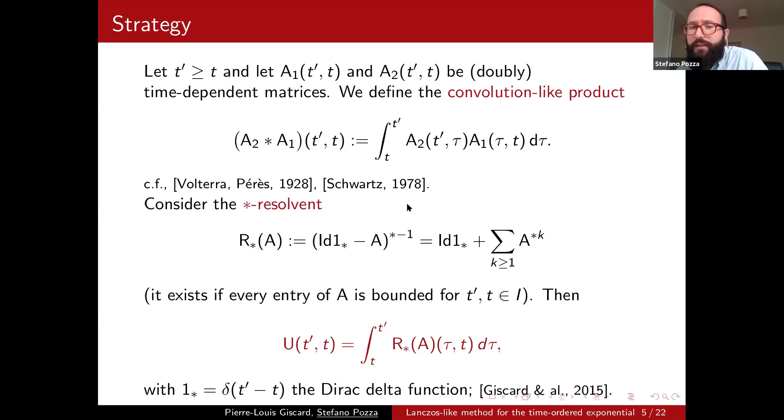So once we have done this, we can define powers of matrices. Pay attention that A star is not the conjugate transpose of the matrix A, but it is the k-th power with respect to the star product of the matrix A. And once we define powers, we can also define what is a resolvent for us. So we define this star resolvent of A in this way, and you can easily prove that this is convergent when A is bounded for all the times in the interval I.